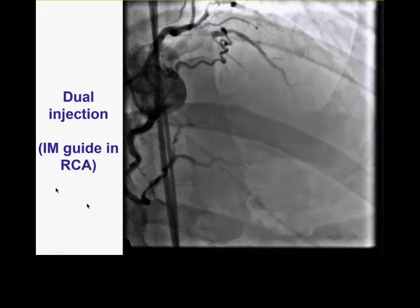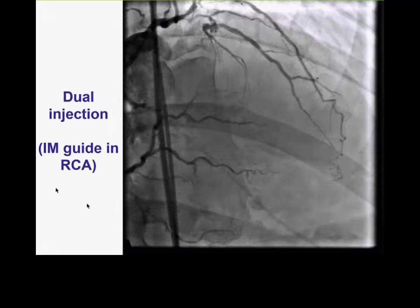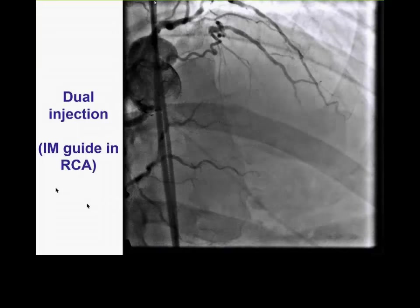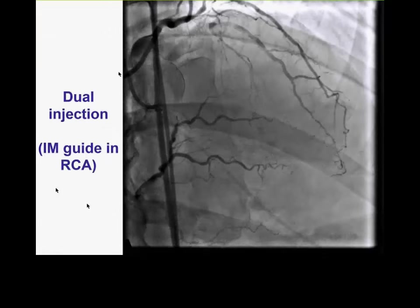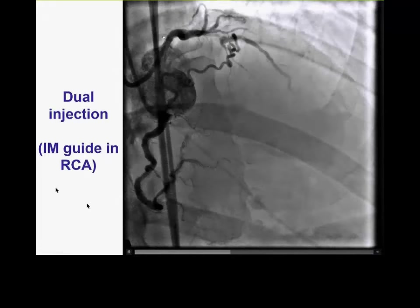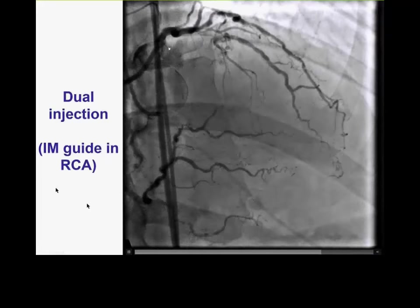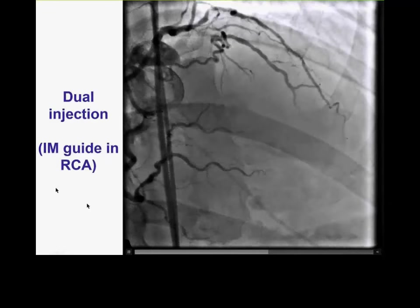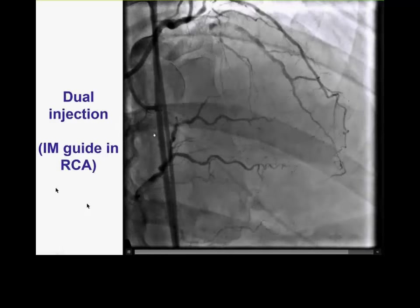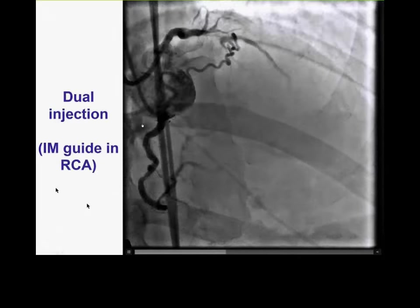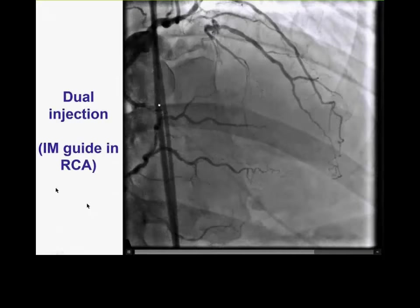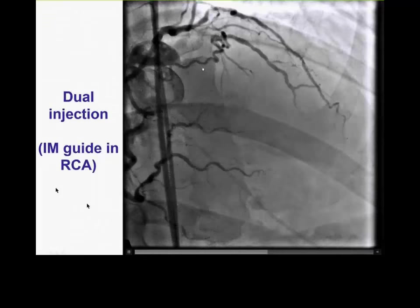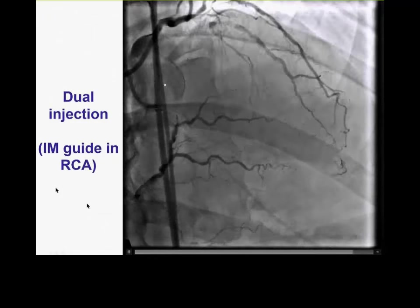This demonstrates the importance of dual injections and being cognizant of the possibility that another vessel may not be seen with standard injections. It is very common to have a proximal right coronary artery branch, or a branch from a completely different origin, that supplies the CTO target vessel. We used a 6Fr IEM guide into the proximal right coronary and an EBU 3.75 guide into the LAD for antegrade crossing.